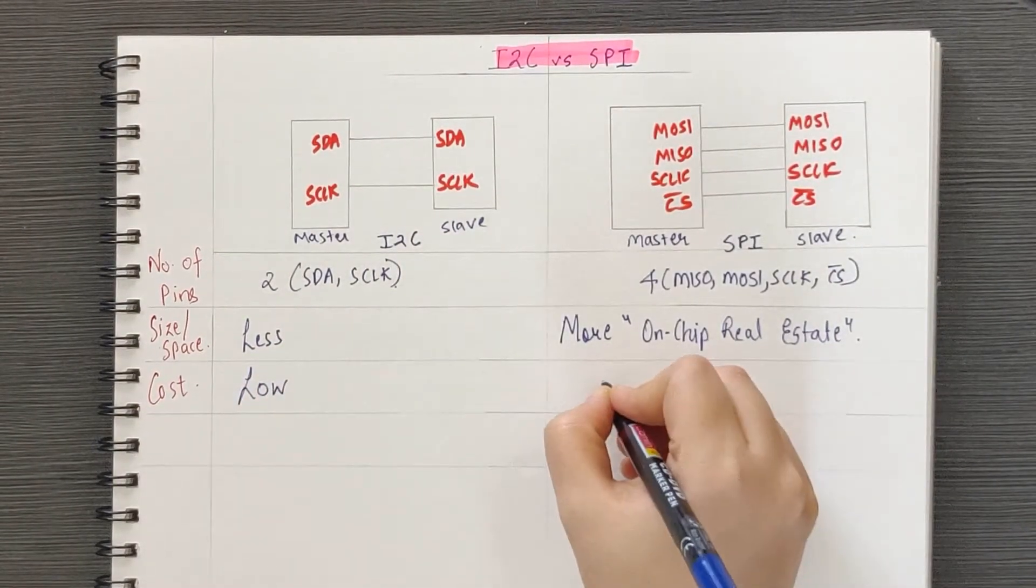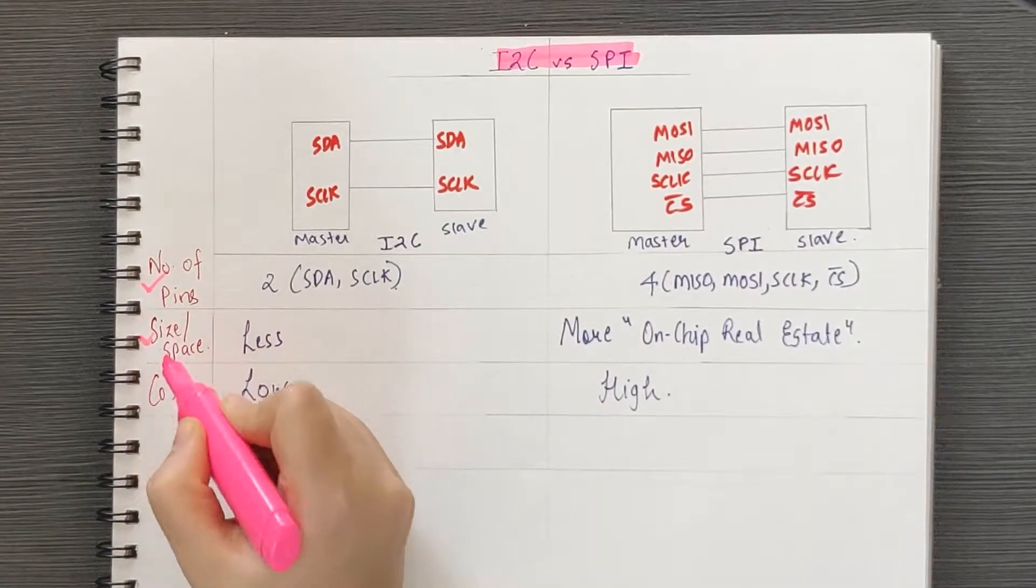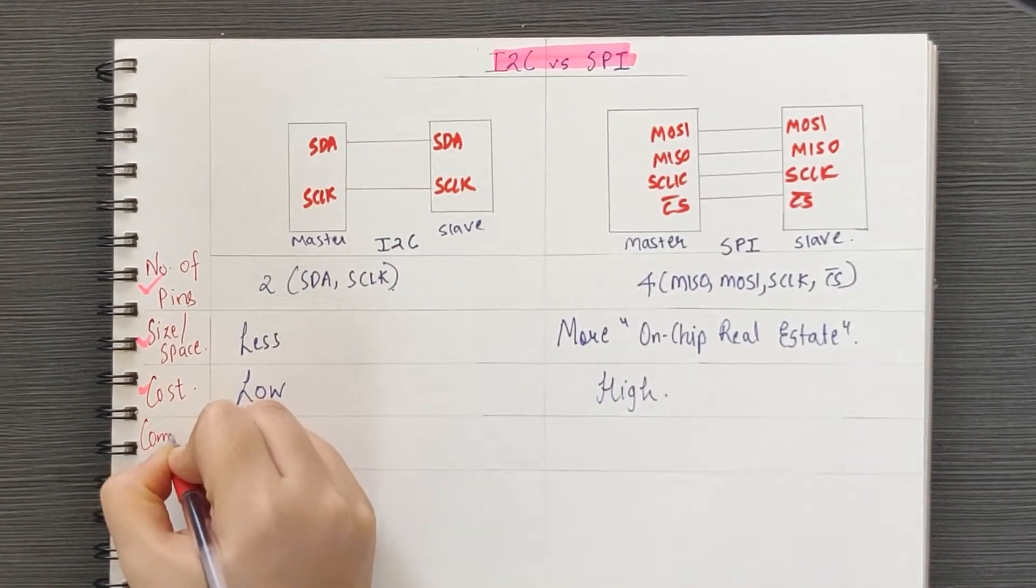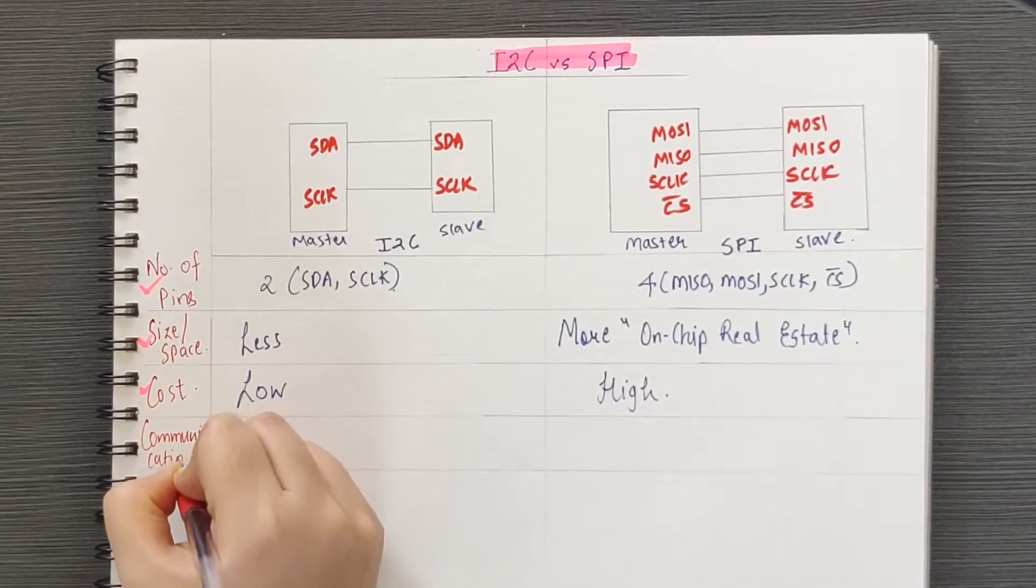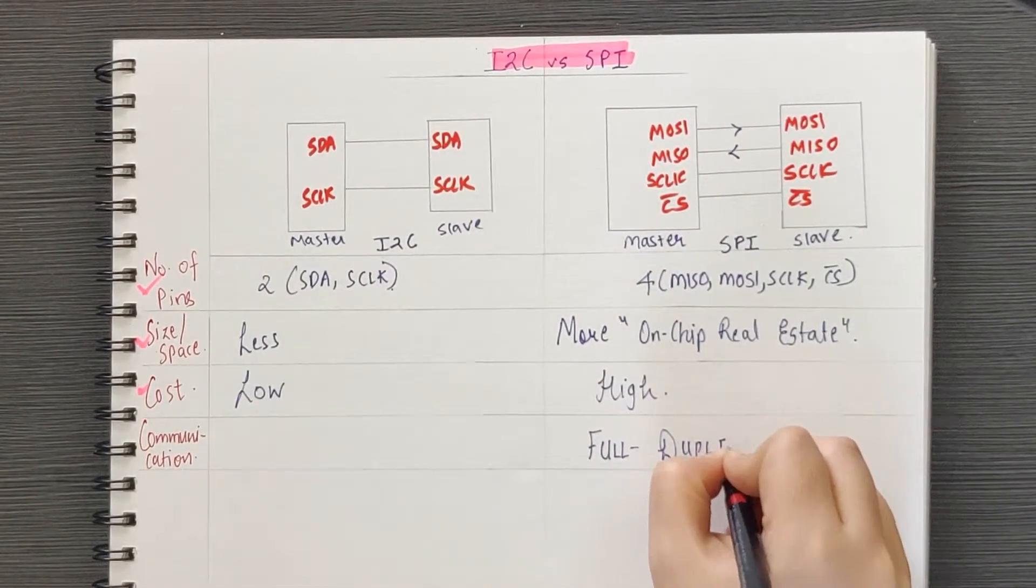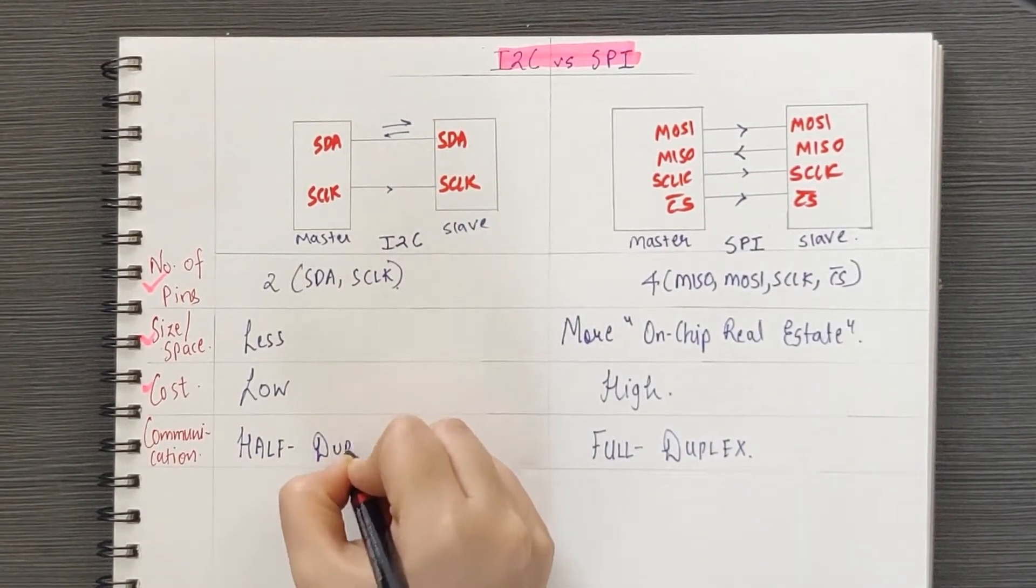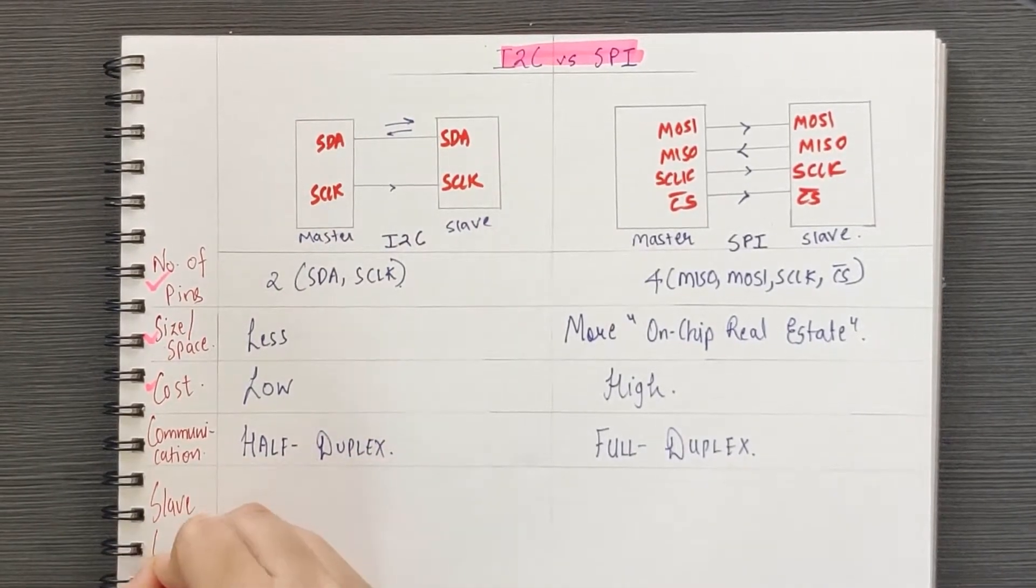Let's consider another implication of the pin difference. MOSI and MISO enable SPI to have full duplex communication, which means in SPI, the data can be transferred from master to slave and vice versa simultaneously. In case of I2C, there is only one data line. Thus, the communication will always be half duplex.